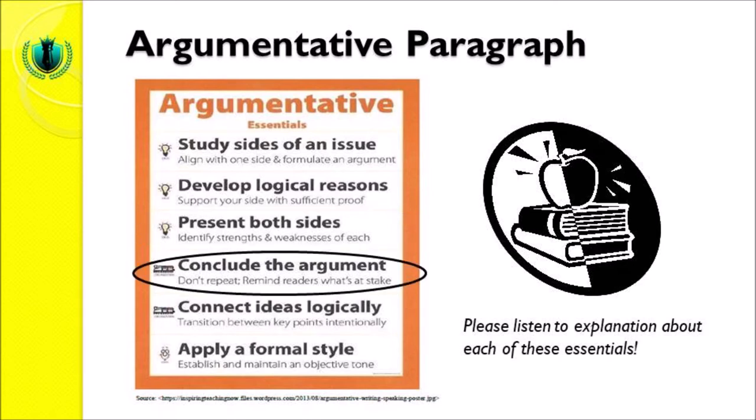The fourth essential is that you need to conclude the argument. Don't repeat — remind readers what's at stake. After stating the argument and supporting it with logical reasons, and after explaining both sides of the issue, we then conclude our argument. But we should not repeat it over and over. Instead, we must remind the reader what is most important and essential about this argument.